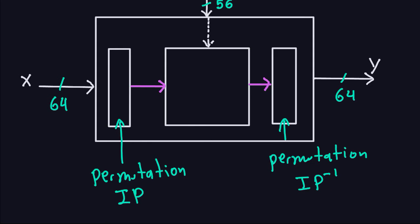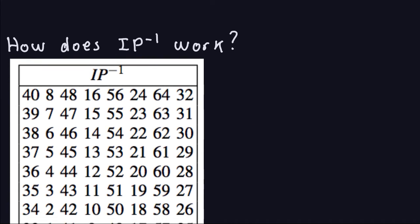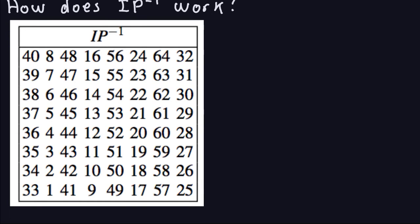So how does the final permutation work? It's going to be very similar to the initial permutation — the table is different, but it works in a similar way. So let's look at the table for IP inverse. You read the rows from top to bottom, left to right — the usual way you read English. What this means is: if you encounter 40 here, whatever bit is in position 40 is going to be transformed to position 1. Whatever bit is in position 8 goes to position 2. Whatever is in position 48 goes to position 3.